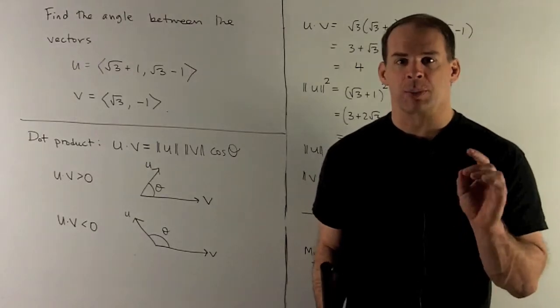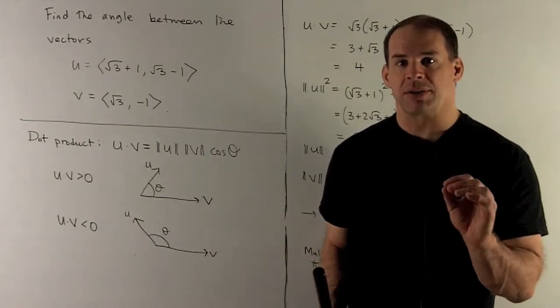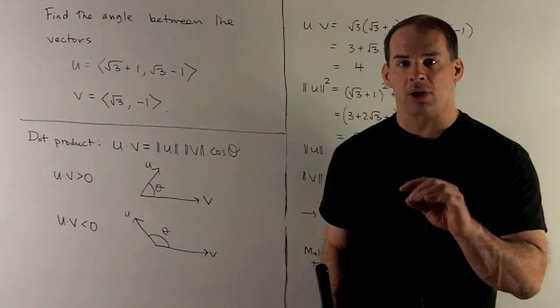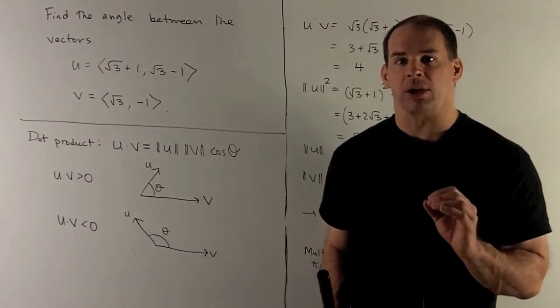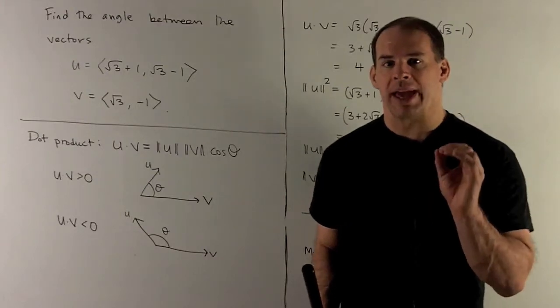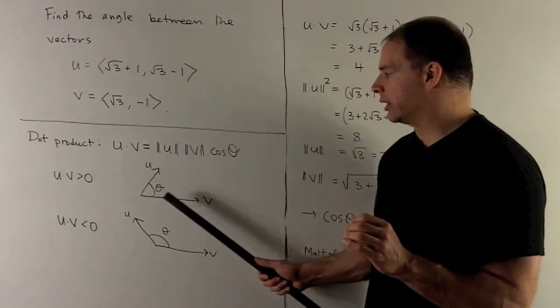If our dot product is positive, then we have a positive cosine. Our angle is going to be between 0 and π. Positive cosine means positive x value on the unit circle, so we have an acute angle like this.